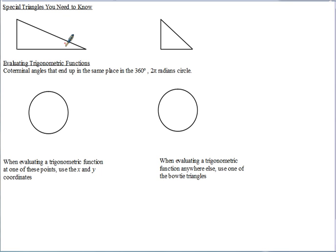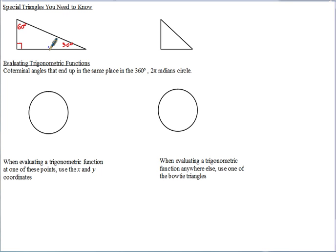On the 30-60-90 triangle: this is 30 degrees, this is 60 degrees, and here's the right angle at 90 degrees. The smallest side, across from the 30-degree angle, is one. The next smallest side, across from the 60-degree angle, is square root of three. And the hypotenuse is two.